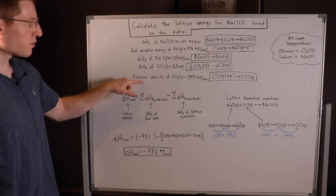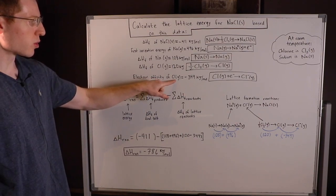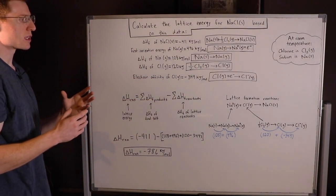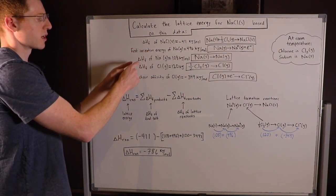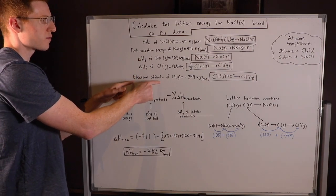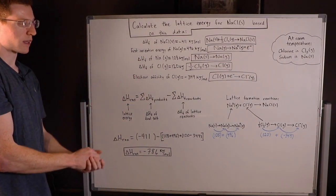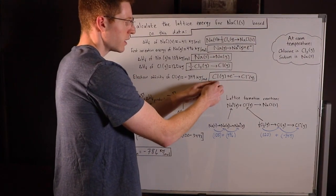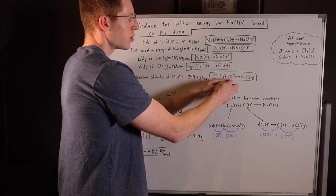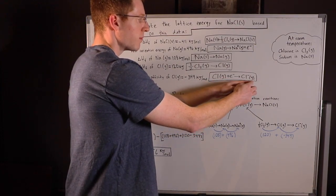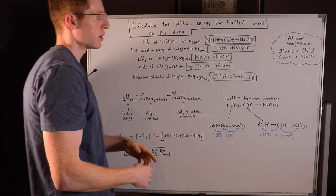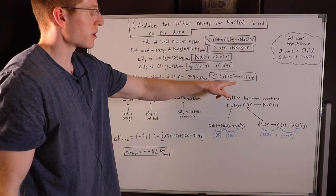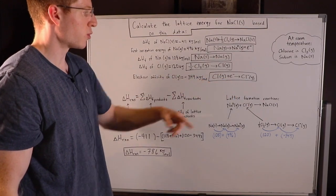The electron affinity of chlorine gas — electron affinity is sort of the opposite of ionization energy. Electron affinity is when you give something an electron. So chlorine gas plus an electron goes to chlorine minus gas. The charge goes down by one, because electrons have a negative one charge.